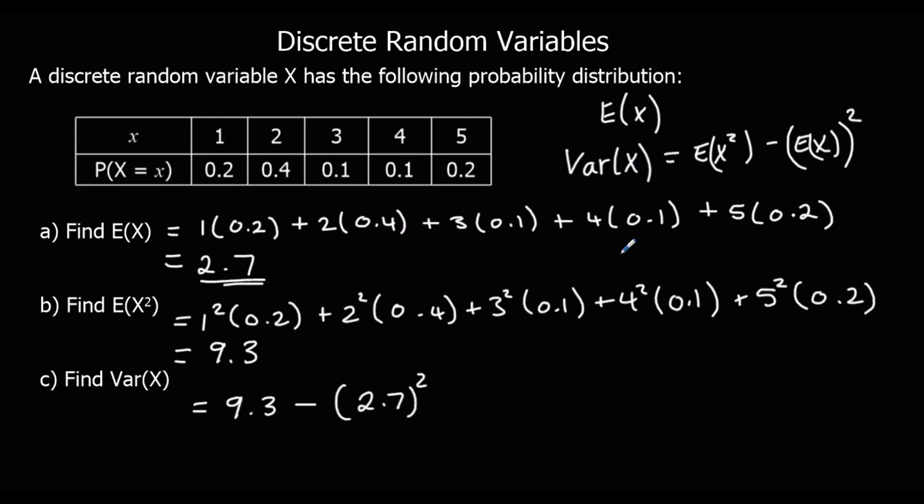So E(X squared), so this E(X squared), take away the mean squared, and that should give us an answer of, in this case, 2.01.